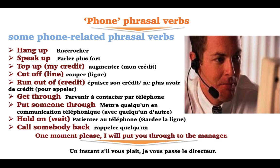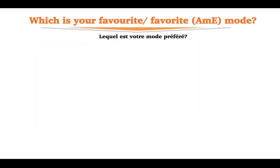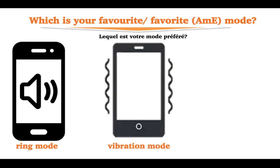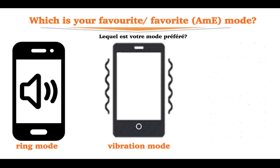Example: One moment please, I'll put you through to the manager. Phone modes: ring mode, vibration mode, silent mode. Example: Please put your phone into silent mode — we are about to start the meeting.